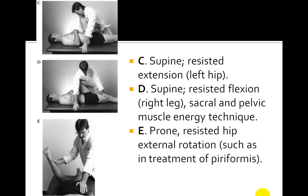Here are some other examples. In C, the patient is supine and there is resisted extension of the left hip. In D, there is resisted flexion of the sacral and pelvic section. In E, the patient is prone and there is resisted hip external rotation, which is used to treat the piriformis muscle.